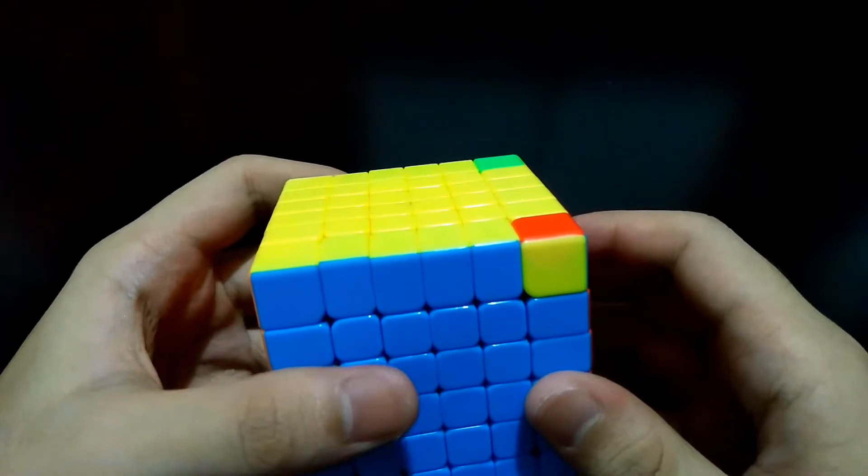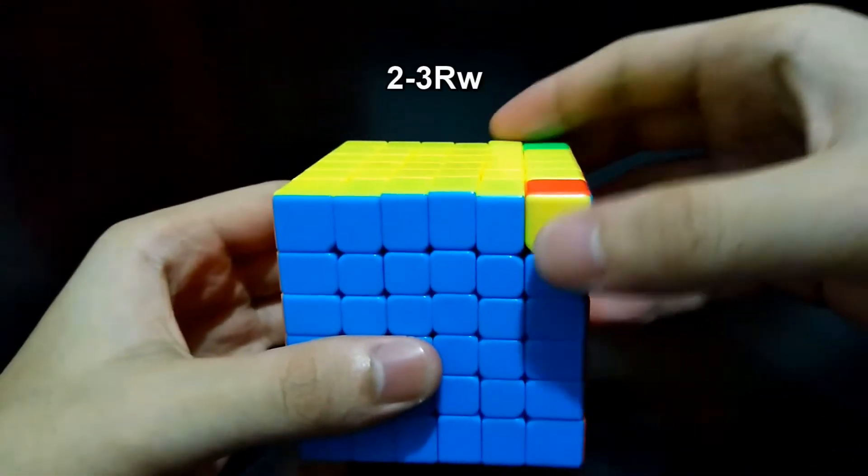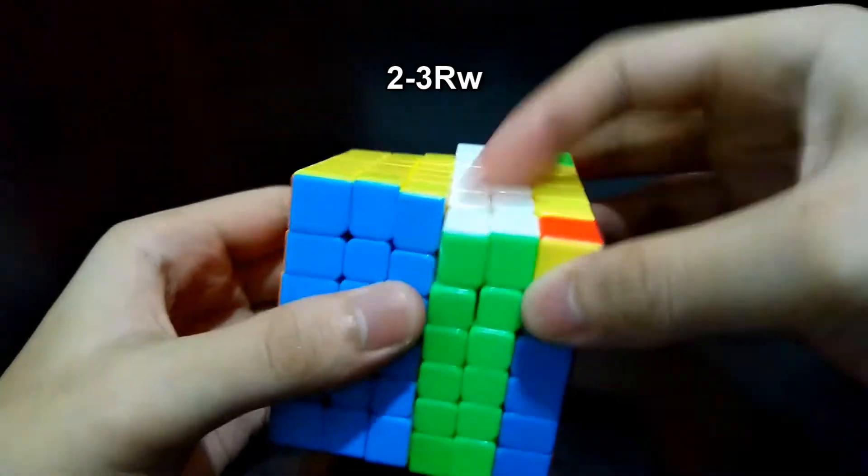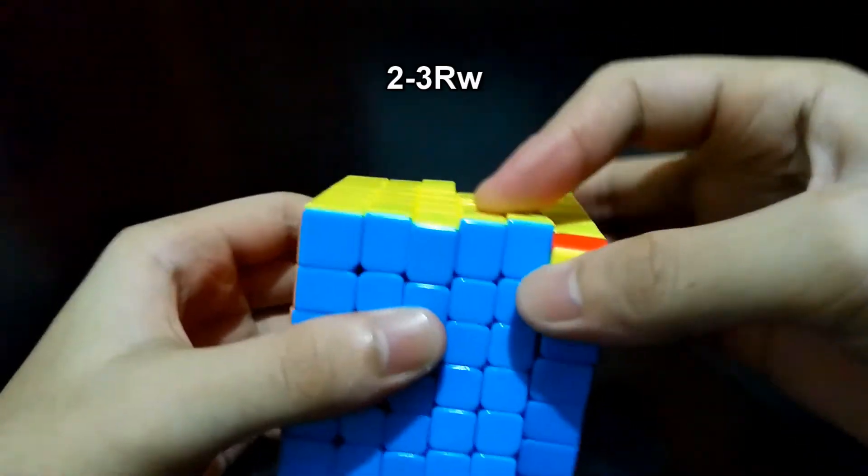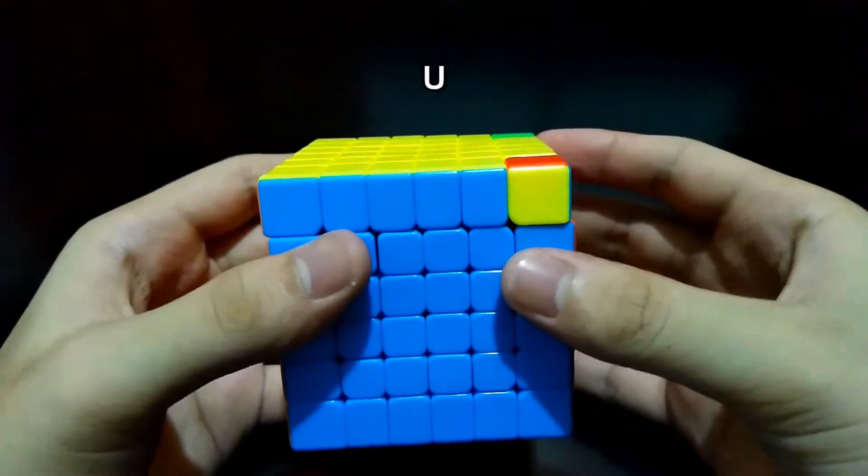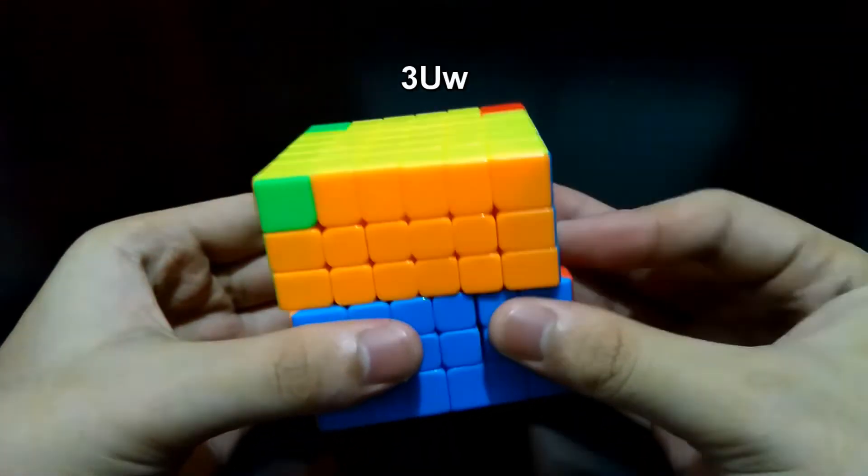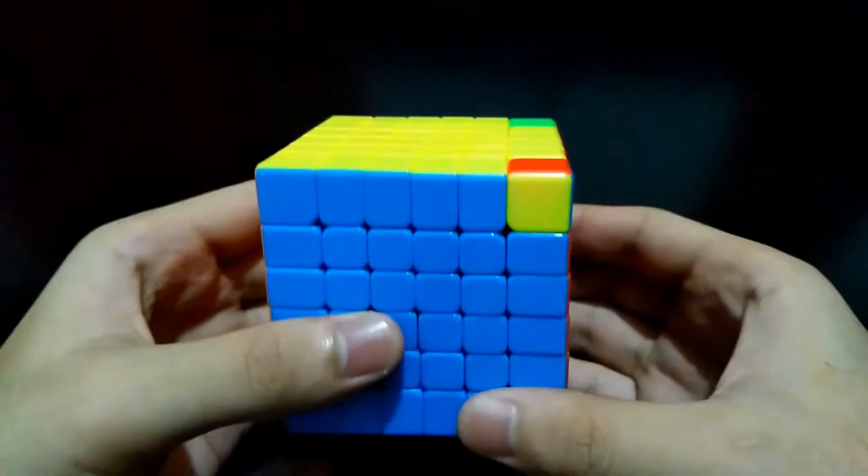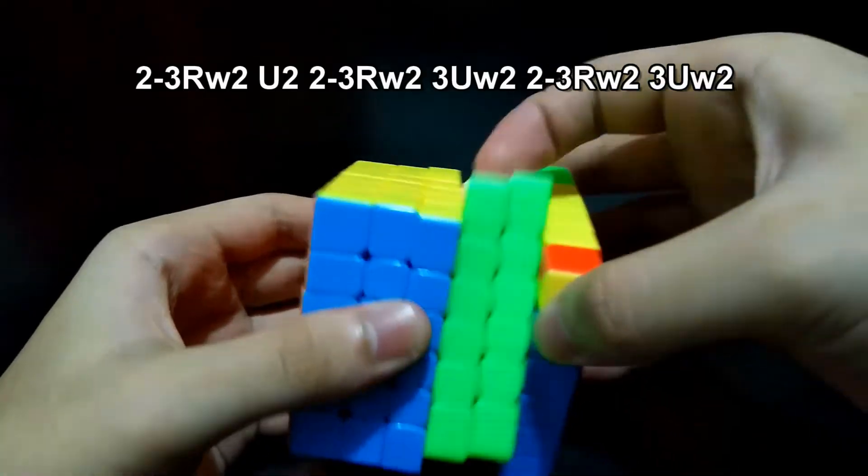You may face any side. For the purpose of the algorithm, 2 to 3RW pertains to this side, U pertains to this side of course, and 3UW pertains to this side. Okay, let's start. 2 to 3RW2, U2, 2 to 3RW2, 3UW2, 2 to 3RW2, 3UW2.